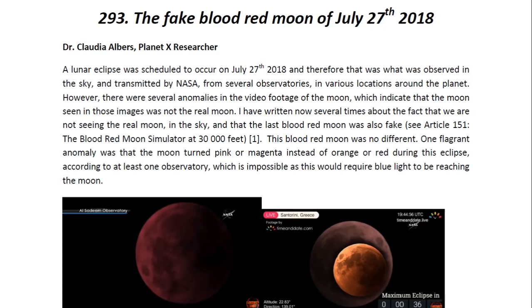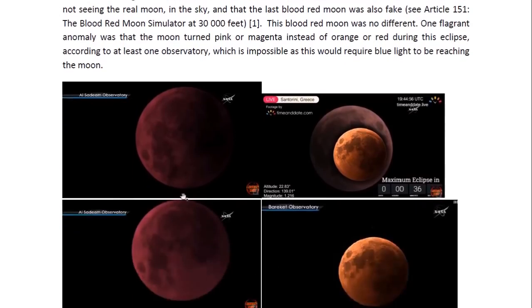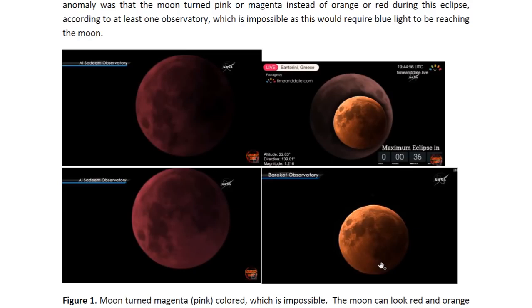One flagrant anomaly was that the moon turned pink or magenta instead of orange or red during this eclipse, according to at least one observatory, which is impossible as this would require blue light to be reaching the moon. And here you see some of these photographs where the moon appears to be pink or magenta. It is supposed to be this color, not that color, not pink. Some orange, red color, that's natural, but this pink is simply not natural. This is simply not possible.